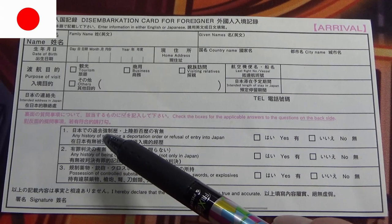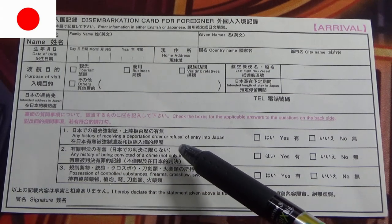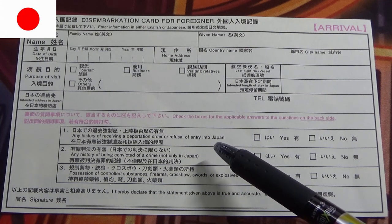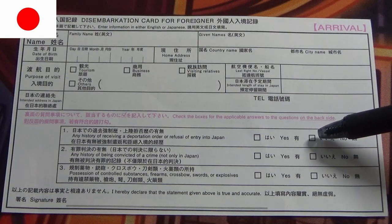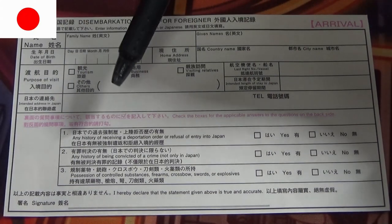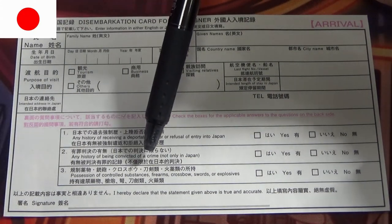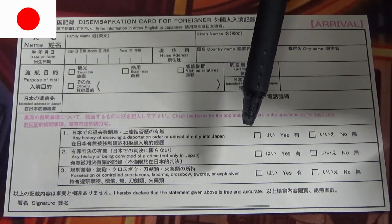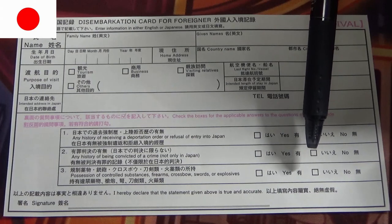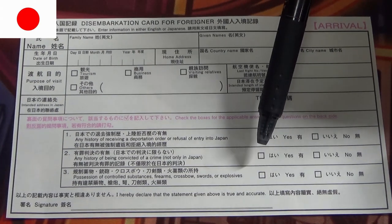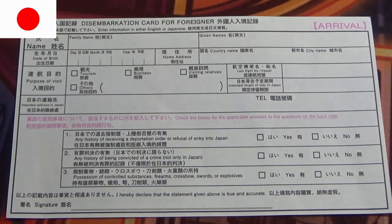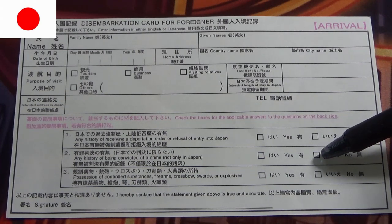Next is the declaration section. Number one: any history of receiving a deportation order or refusal of entry into Japan. Be very careful how you answer this one — be honest. If you select yes, most likely you'll be scrutinized. In my case, it's no. Number two: any history of being convicted of a crime, not only in Japan. Again, be very careful. If you were convicted in your country for some crime, be honest. You're going to be scrutinized and they'll want to know what the crime was. Depending on the severity, you might be rejected. In my case, it's no.